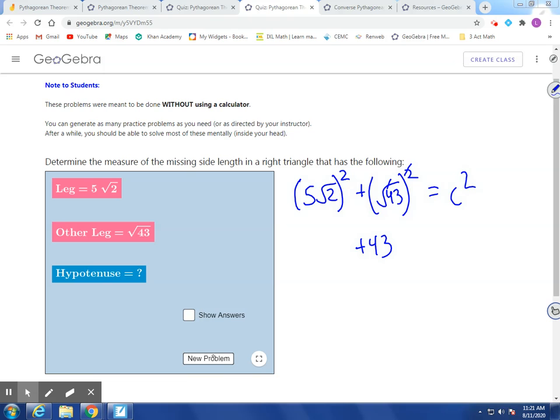Now, the square goes to both of these, the 5 and that root 2. So when I square 5, I'm going to get 25, and these cancel each other out, so I'm left with 5 times 2.